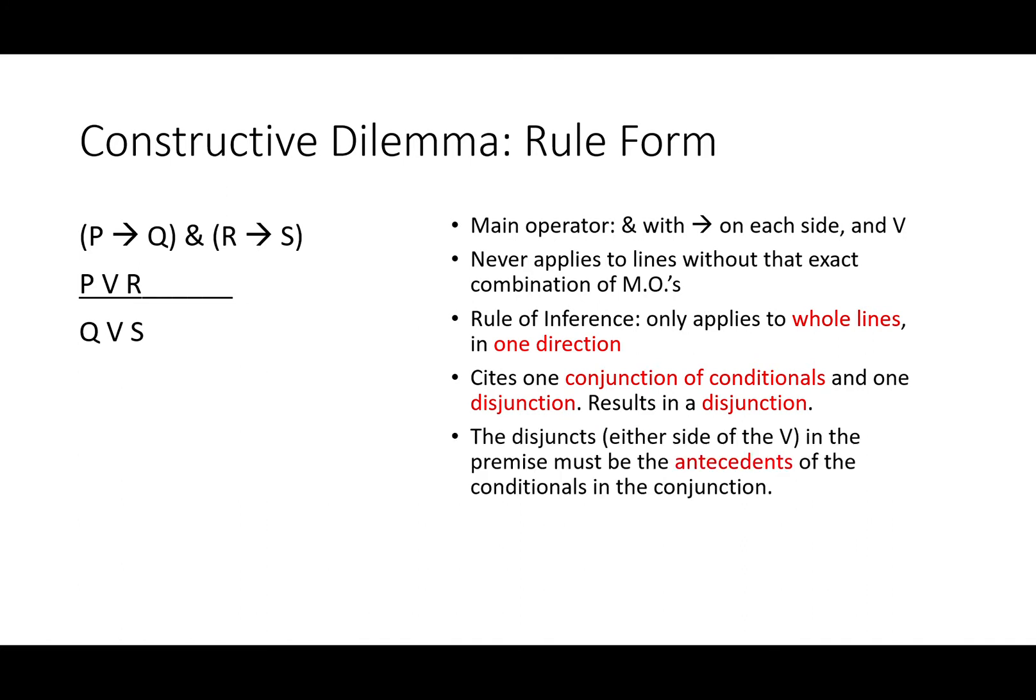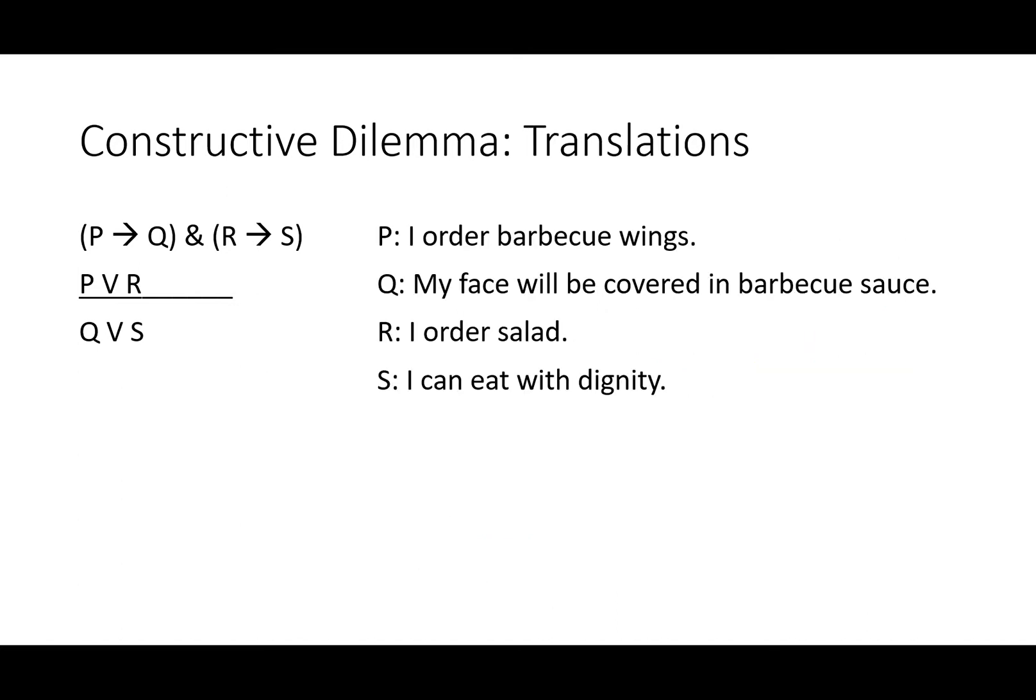The disjuncts either side of the V in the premise must be the antecedents of the conditionals in the next premise. The disjuncts in the conclusion are the consequences of the conditionals in the conjunction. This is going to make hopefully a lot more sense when we translate it into everyday life, because you really do use constructive dilemma all the time.